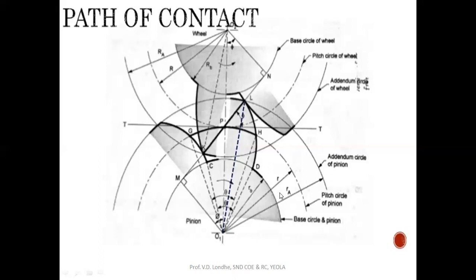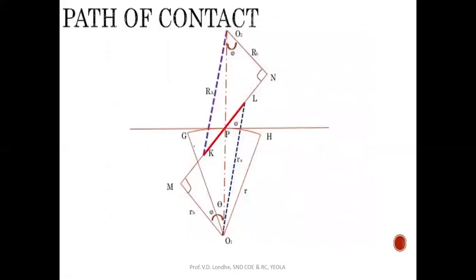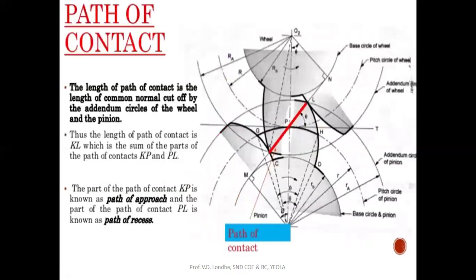Now let's see in detail. There are two basic triangles: O1MP and O2NP. The red line indicates the line along which contact occurs. Point K is where the gear pair comes into contact and point L is where they leave contact. P is the pitch point. The length of the path of contact is the length of the common normal that cuts the addendum circles of both the gear and the pinion.